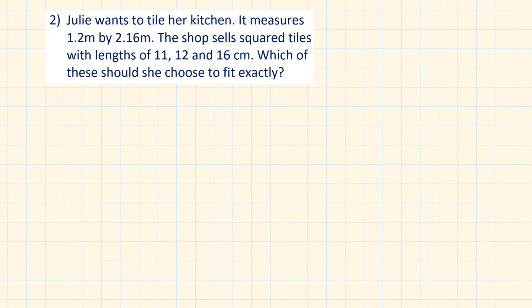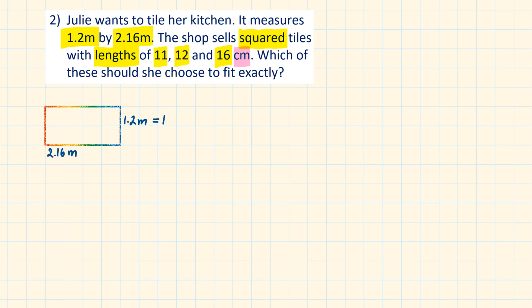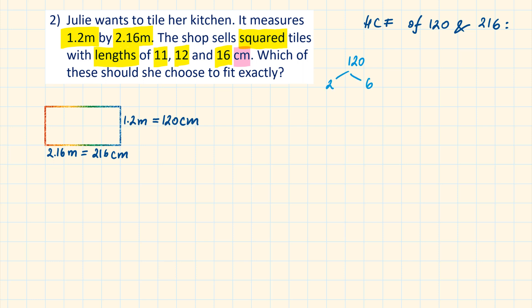Julie wants to tile her kitchen, which measures 1.2 meters by 2.16 meters. The shop sells square tiles with lengths of 11, 12, and 16 centimeters. Which should she choose to fit exactly? First, let's make sure all measurements are in the same units: 1.2 meters is 120 cm and 2.16 meters is 216 cm. Because we're fitting smaller tiles into a larger area, we're working with factors, so we need the HCF of 120 and 216. Since these numbers are bigger, we'll use a prime factor tree.